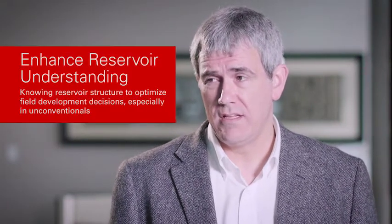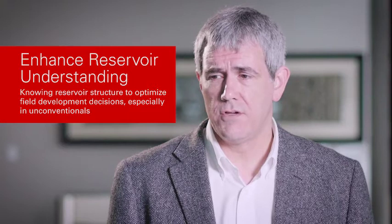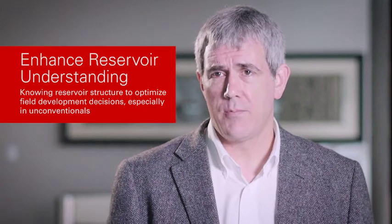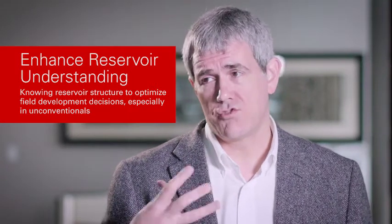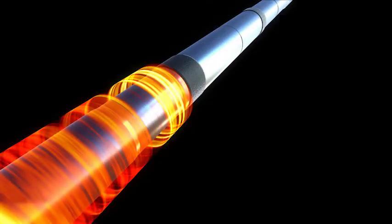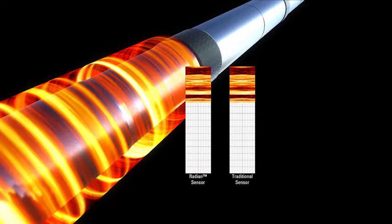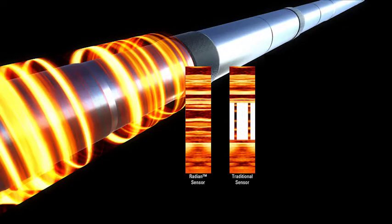So they ran the Radiant tool, and it did two things for them. First, it showed up a lot more detail about the structure they were going through. Whereas they previously had this zone they just called the 'noisy zone' — where they saw a lot of variation in the gamma ray without understanding why — with the azimuthal gamma ray they were able to see details in the local dip structure in the reservoir. That helped clarify the geological structure.